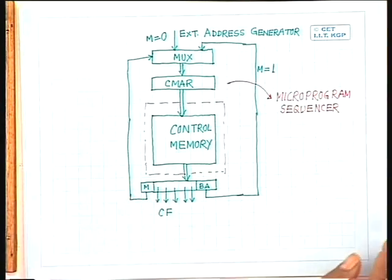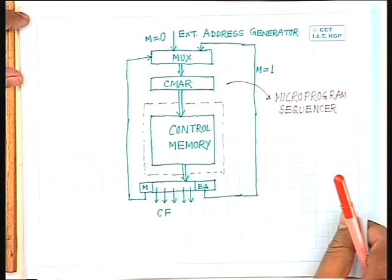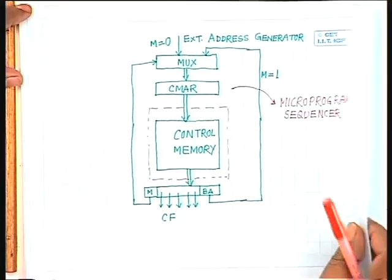All the components except the control memory take part in deciding the next location in the control memory that is to be read, and all those components are called the microprogramm sequencer. The multiplexer, control memory address register, and the output register — all these taken together — become a microprogramm sequencer, and the microprogramm sequencer along with the control memory becomes the entire microprogrammed control unit.